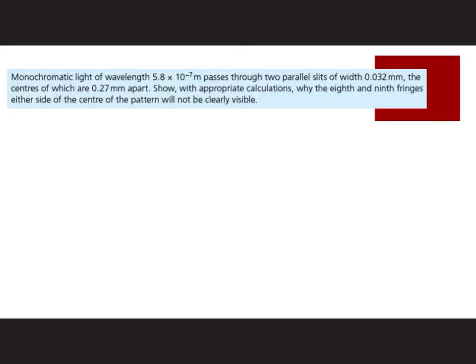Okay, so let's try an example. We have monochromatic light, that means a single wavelength. It's at 5.8 times 10 to the minus 7 meters, so 580 nanometers, passing through two slits. Now, they are 0.032 millimeters wide, and they are 0.27 millimeters apart.